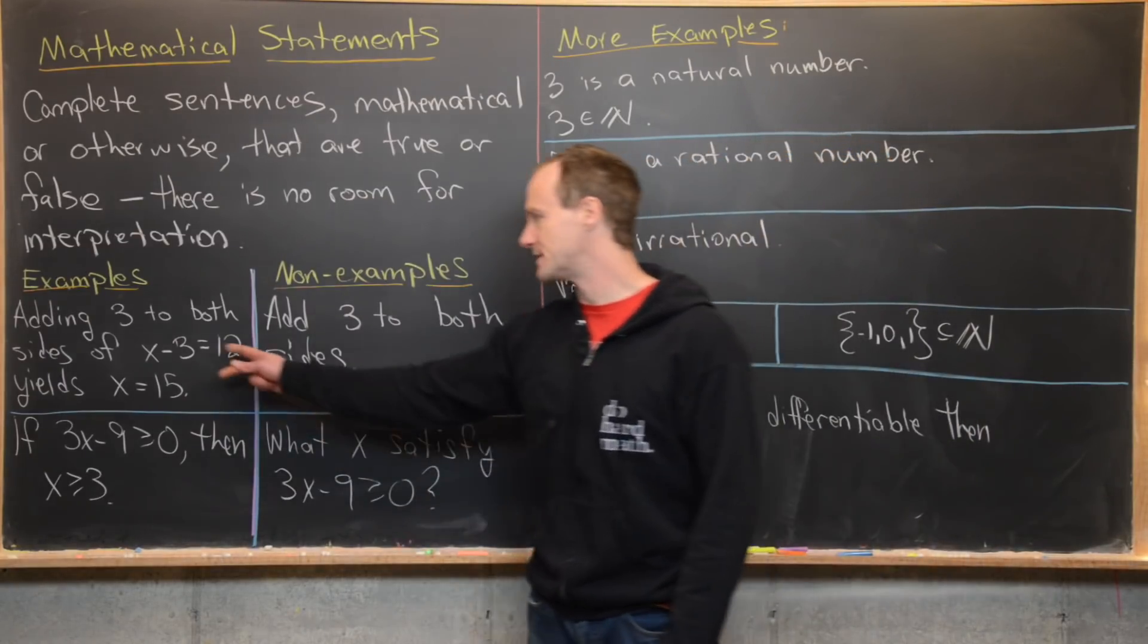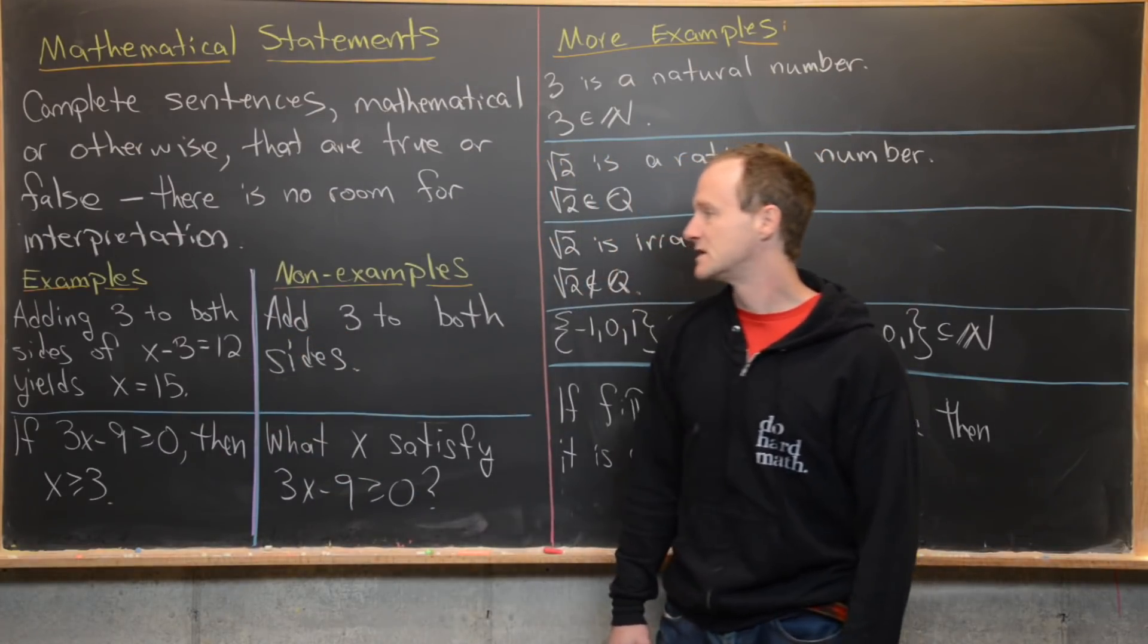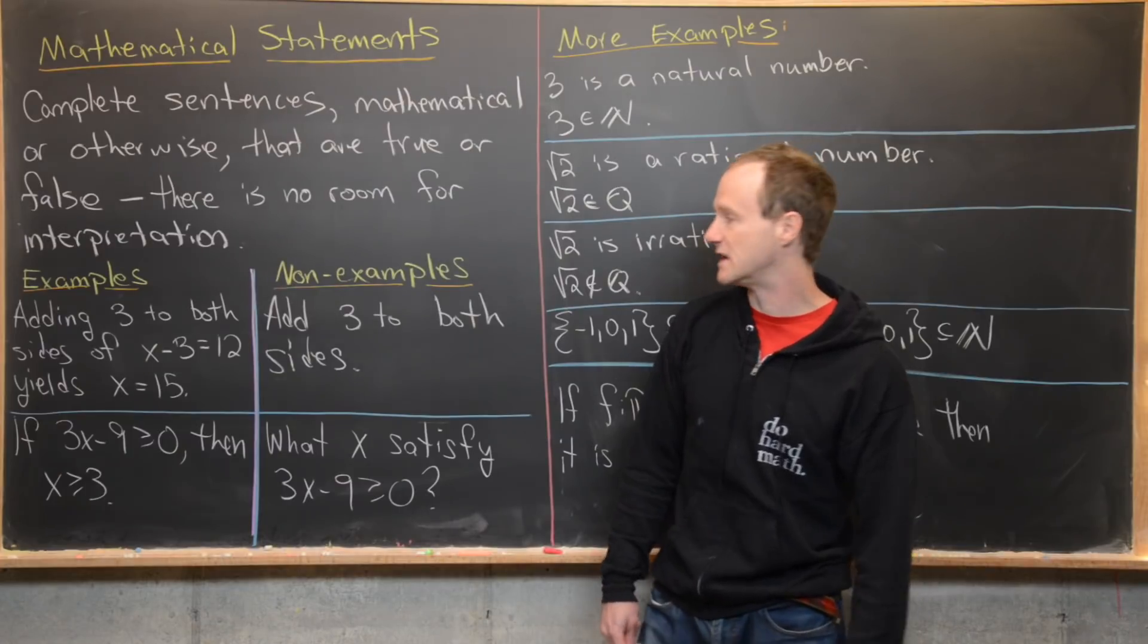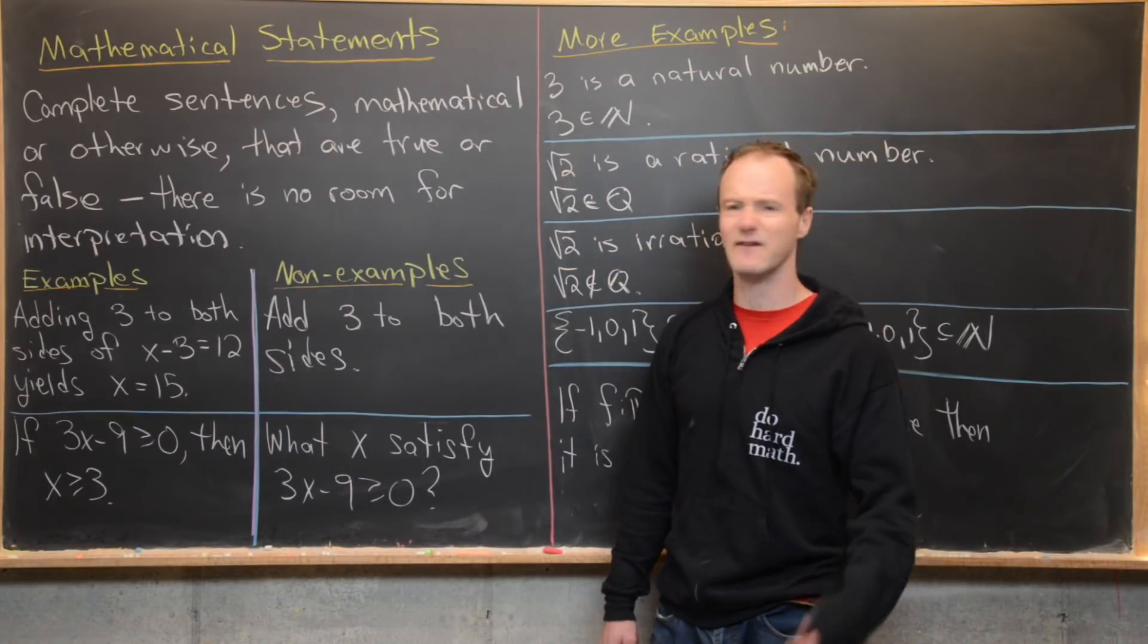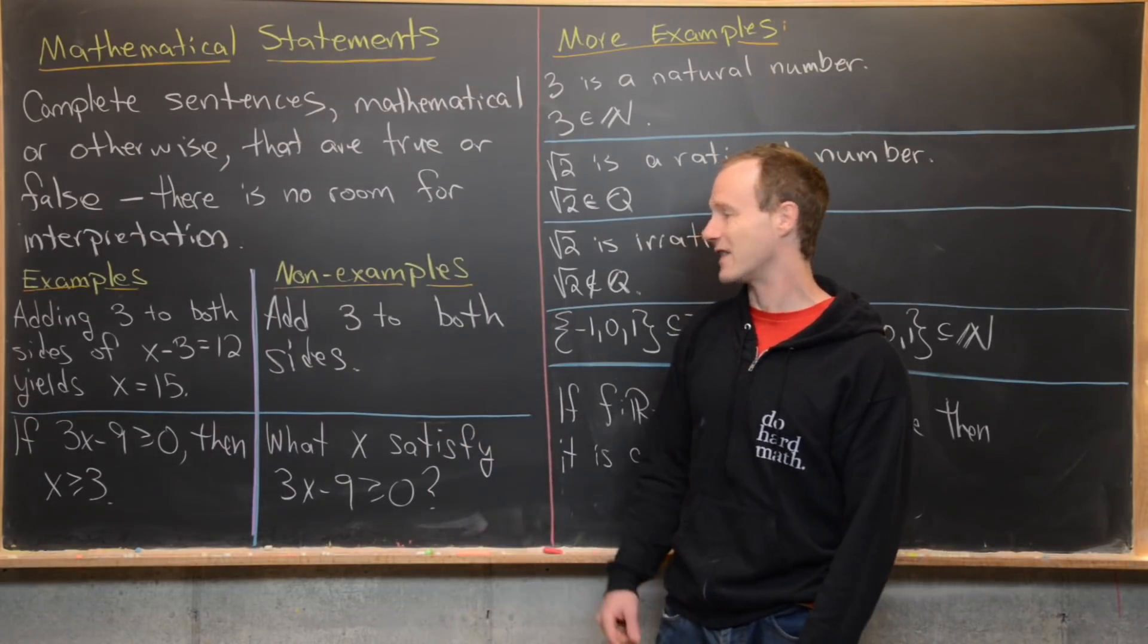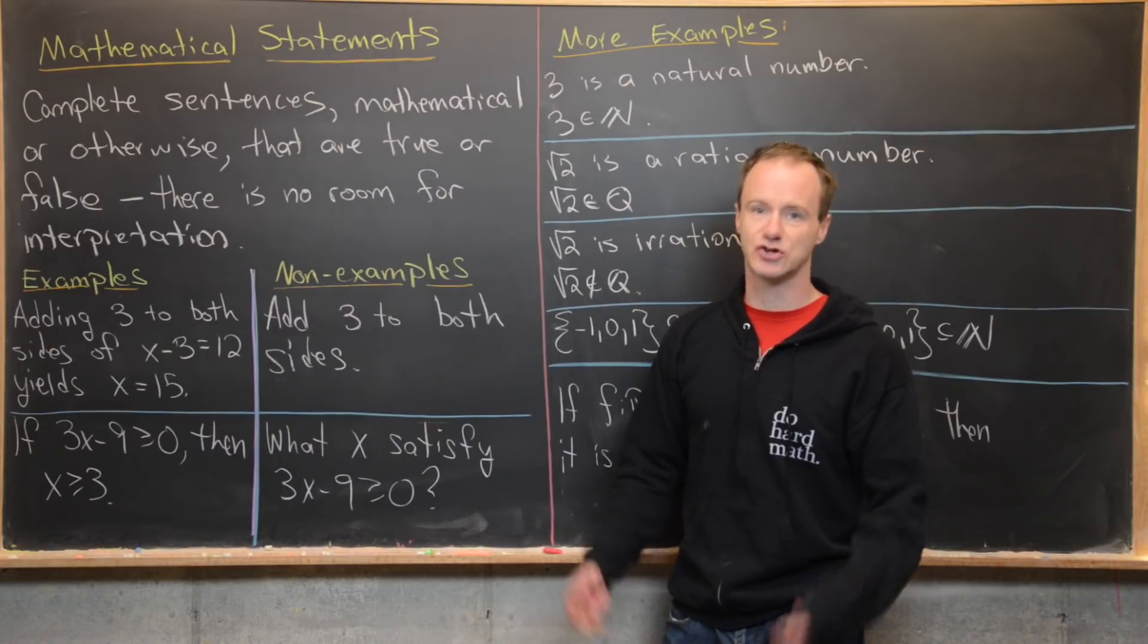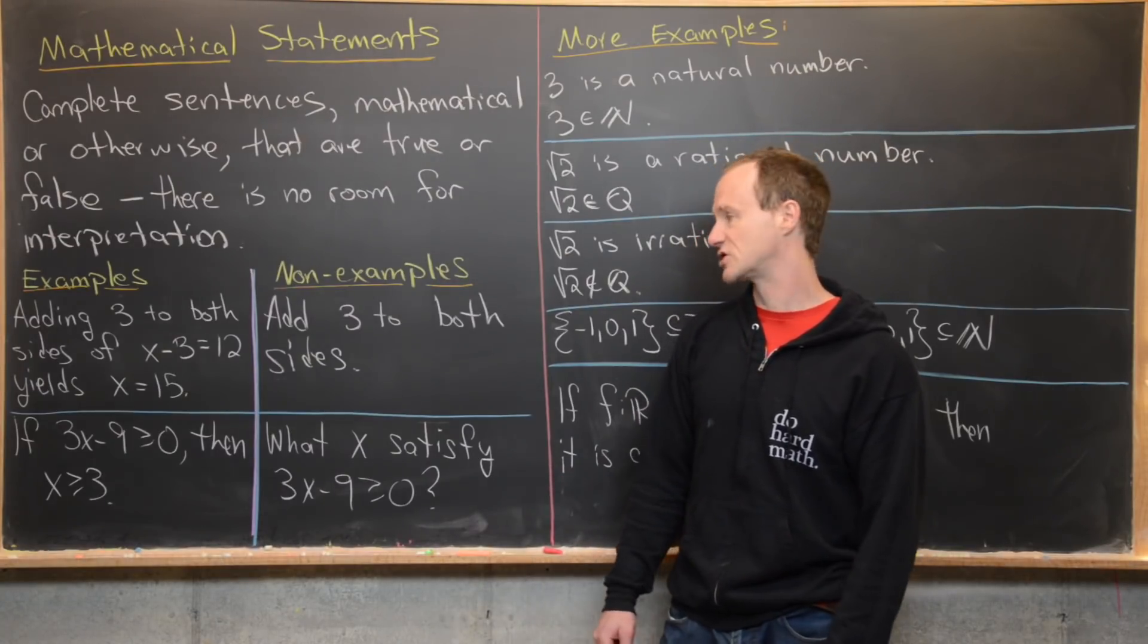Here are some examples and companion non-examples. Our first example says adding three to both sides of x minus three equals 12 yields x equals 15. That's a nice complete sentence way of solving that very simple algebra problem. Here's a companion non-example that says add three to both sides. I guess that's a complete sentence, but it's not always true or false. In fact, it doesn't really provide much context.